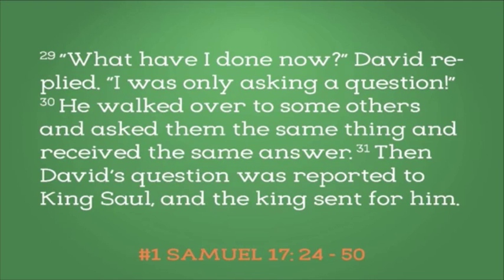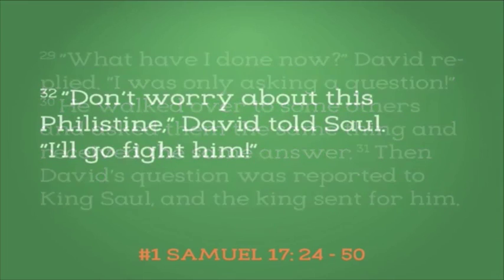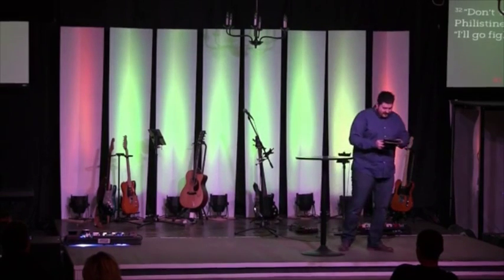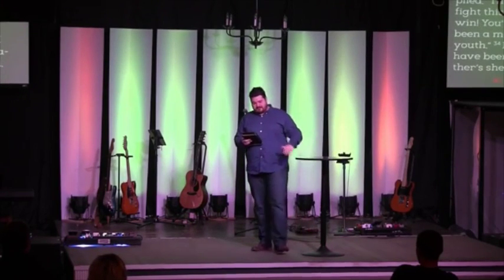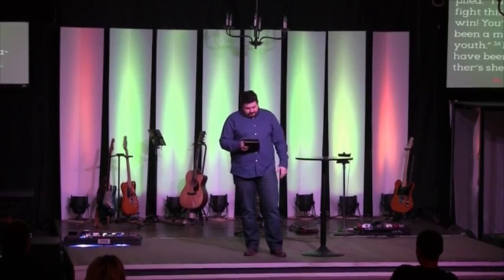In verse 32, David — possibly a 15-year-old teenager — walks into the king's tent and says, 'Don't worry about this Philistine.' His oldest brother Eliab was angry: 'What are you doing here? What about those few sheep you're supposed to be taking care of? I know about your pride and deceit — you just want to see the battle.' And David replied in younger-brother style, 'What have I done now? I was only asking a question.' He walked over to some others and asked the same thing again.